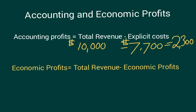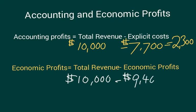For the economic profits, we'll use the same firm where revenue is also $10,000 per month. Now we subtract all economic costs. Let's say the explicit costs are $7,700 and the implicit costs are $1,700, giving us a total of $9,400 in total economic costs.